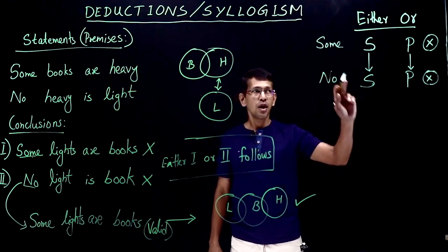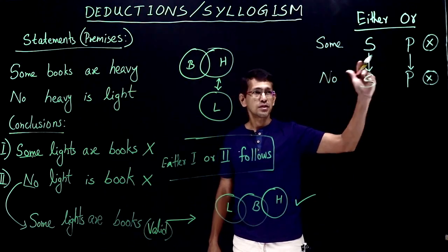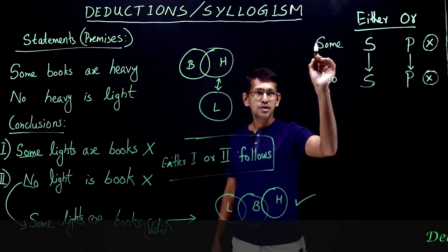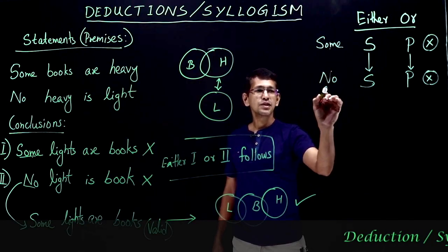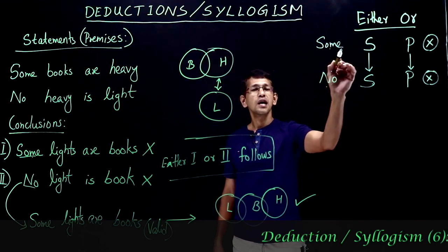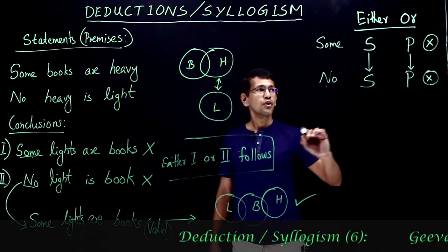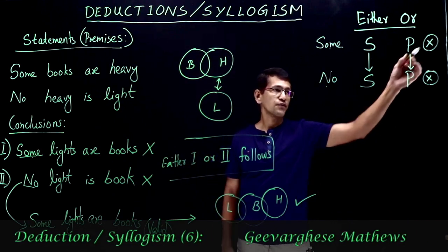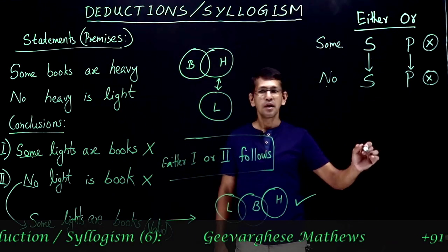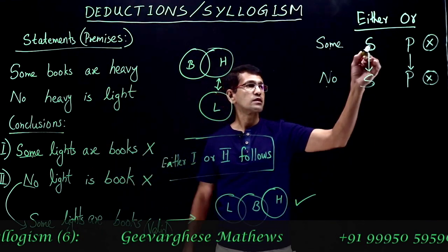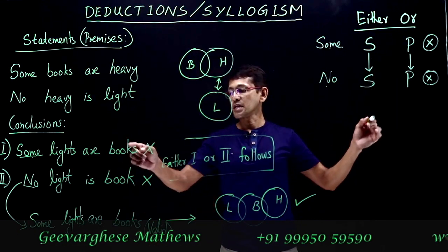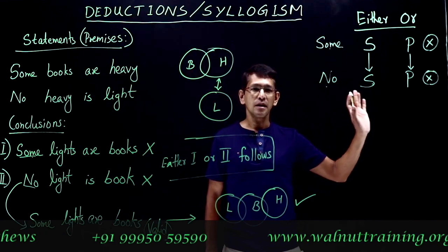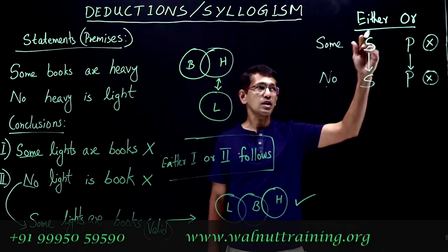How do you check either-or? If one of the conclusions is 'some' and the other conclusion is 'no' — if it is some and no, and both do not follow, and the subject is subject and the predicate is predicate, then that case, it must be either-or type.